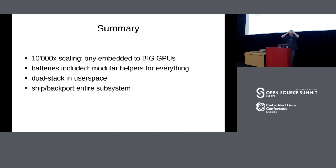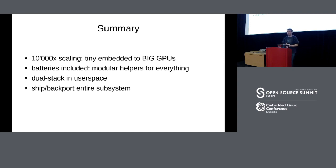Summary: DRM, the graphics subsystem in upstream, scales by a factor of 10,000 from the tiniest to the biggest driver. Nowadays we have batteries included for everything. For shipping, the standard is a dual stack — one single upstream kernel driver, and a dual user space with a reverse-engineered open source driver and the closed source stack with all the value add. Second point: for shipping, you just backport the entire subsystem — that's what everyone does. Thanks a lot for listening.